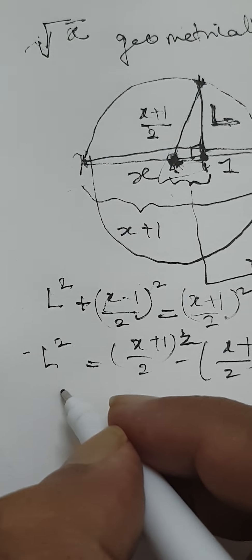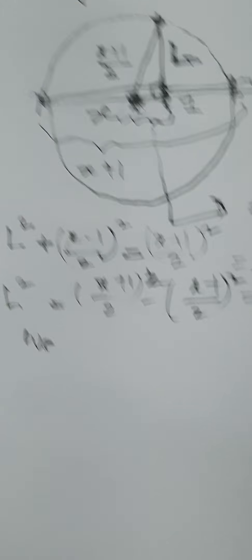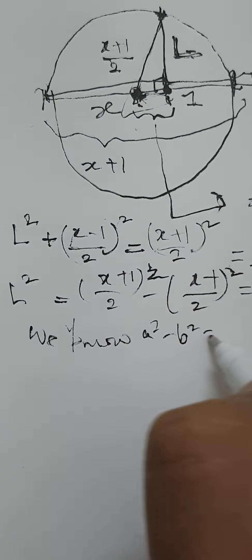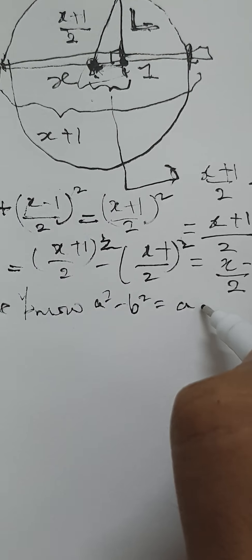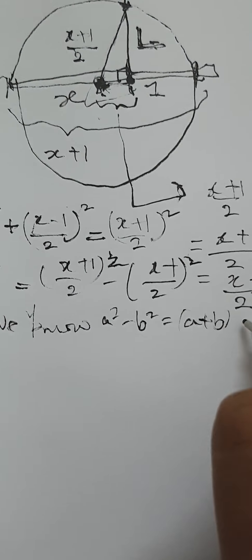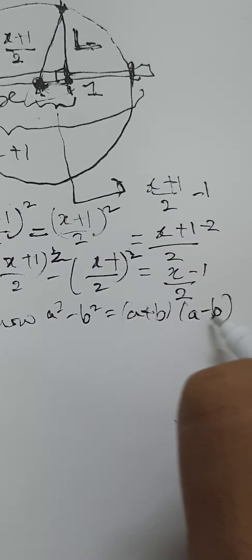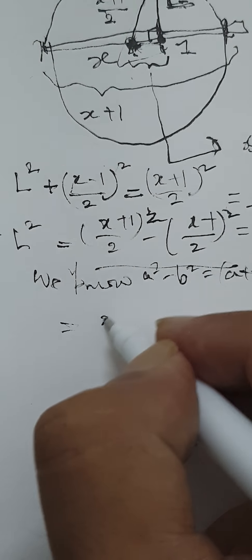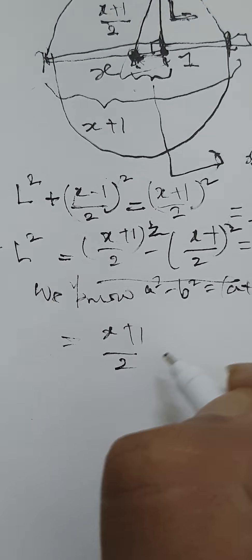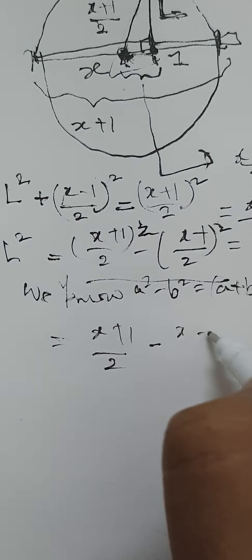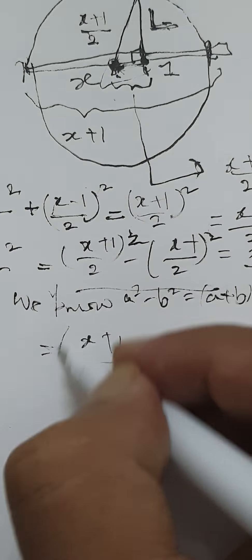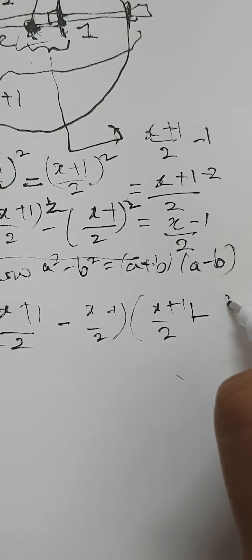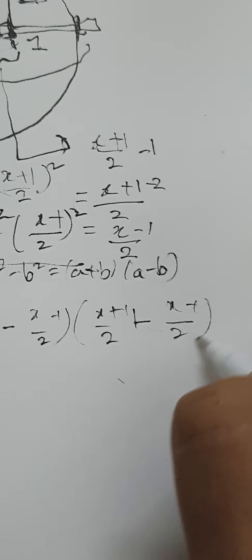Now we know that this part can be written as x plus 1 by 2 minus x minus 1 by 2, multiplied by x plus 1 by 2 plus x minus 1 by 2.